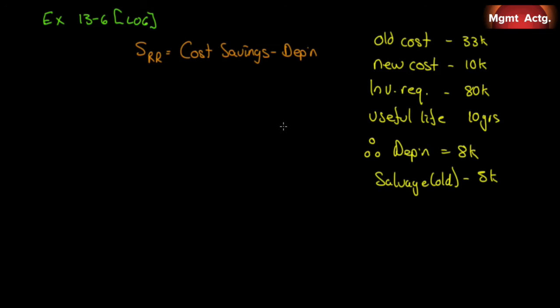Another problem here: Exercise 13.6, Simple Rate of Return Method. The management of Stillford Micro Brew is considering purchasing an automated bottling machine for $80,000. The machine would replace an old piece of equipment that costs $33,000 per year to operate. The new machine would cost $10,000 per year to operate.